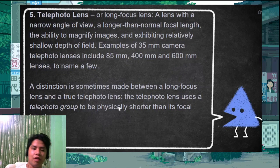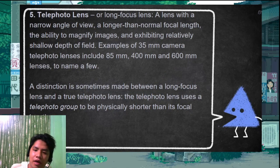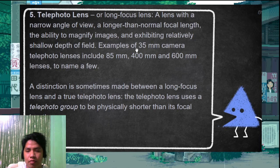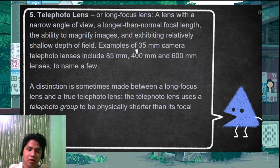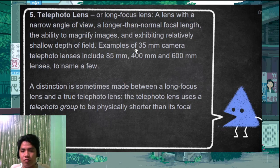The telephoto lens is like a macro lens but with an even longer focal length and a smaller angle of view. It is used when you want to capture subjects at a long distance — it is used in surveillance work.